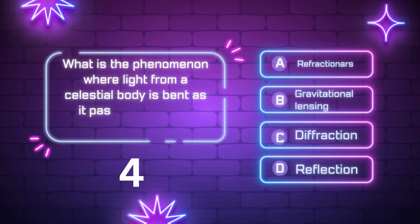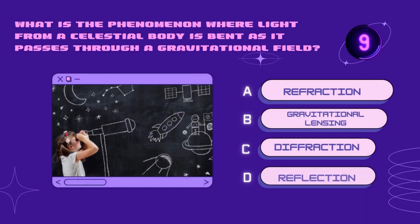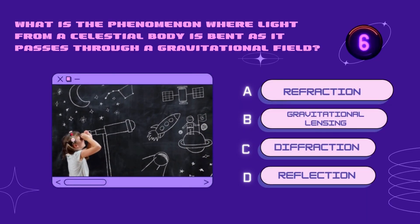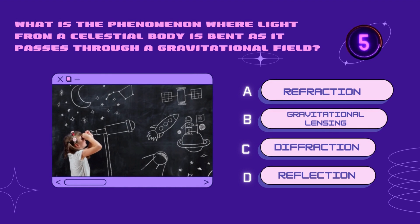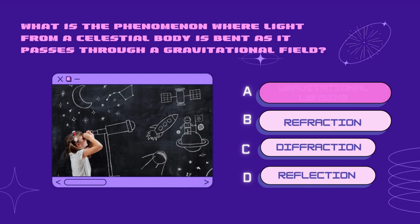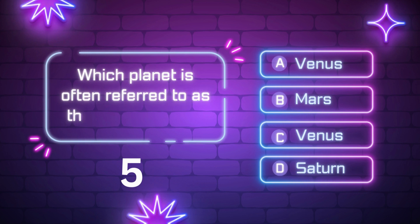What is the phenomenon where light from a celestial body is bent as it passes through a gravitational field? Refraction, gravitational lensing, diffraction, reflection. Your time starts now. Right answer is gravitational lensing.